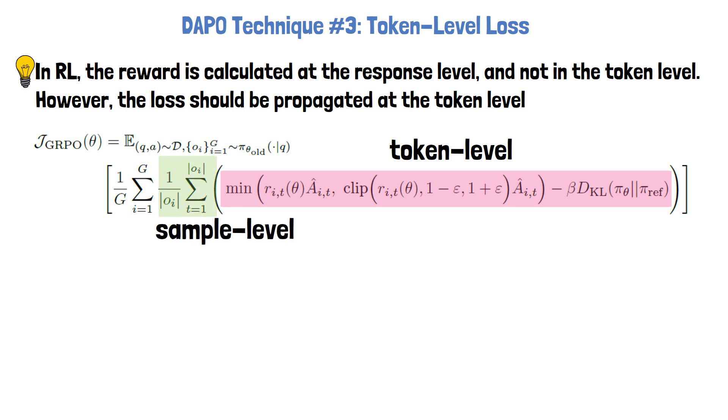Even without understanding what is written here, we see that it is being averaged by dividing by the response length, which makes it a sample level loss, only after we average the sample level loss across all sampled responses.